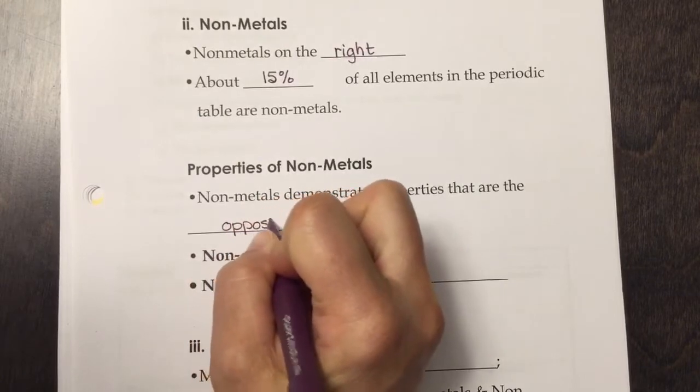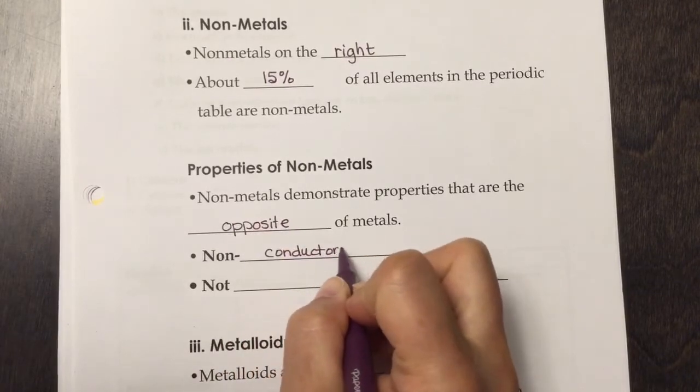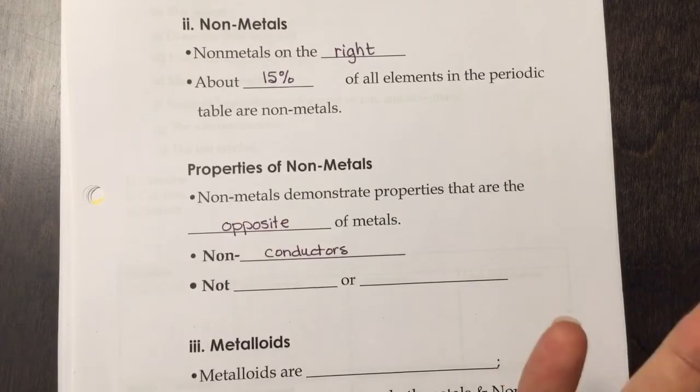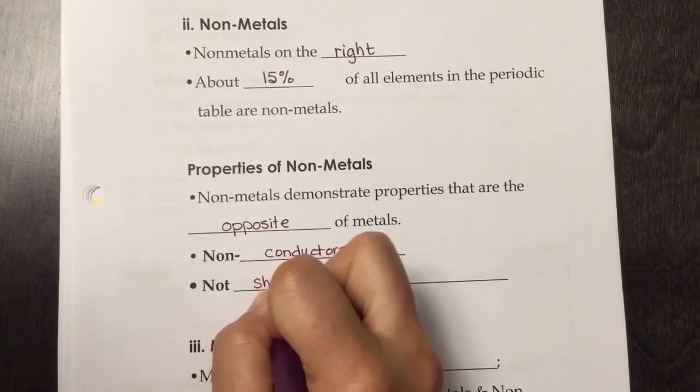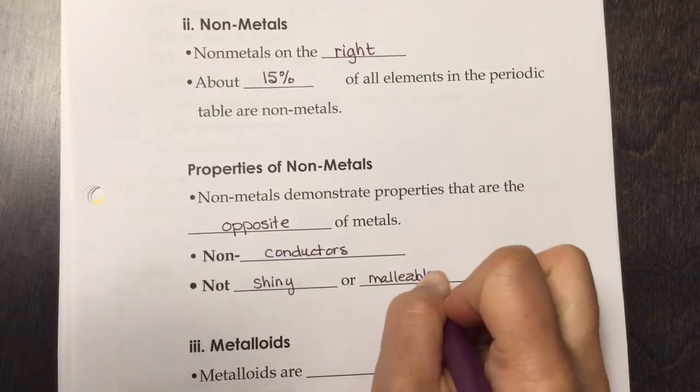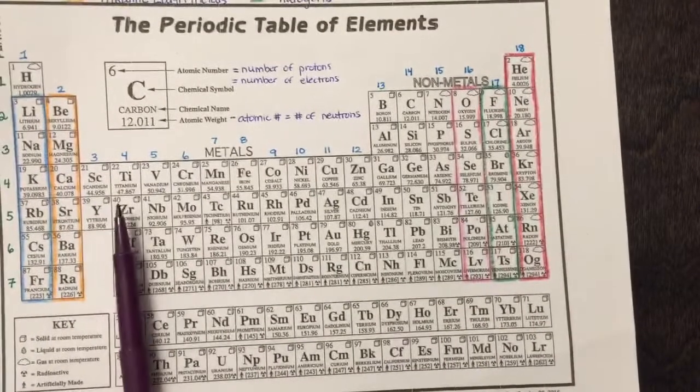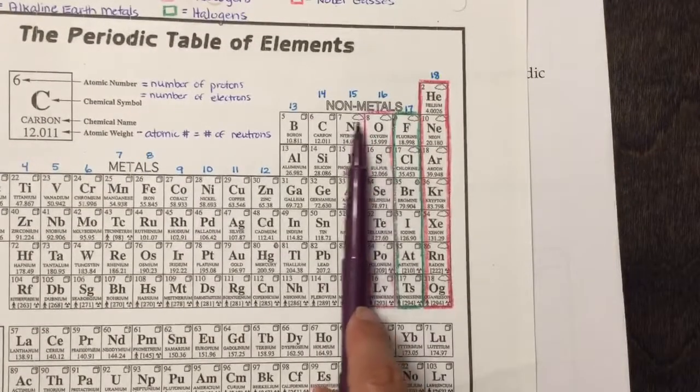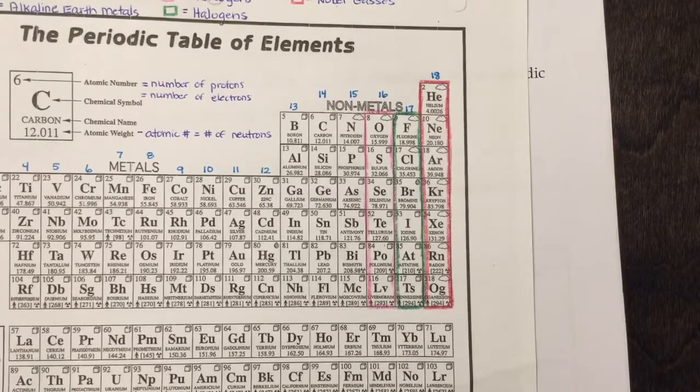Non-metals demonstrate properties that are opposite of metals. They are not conductors of electricity - thank goodness, otherwise when we're outside in a lightning storm, everybody outside would be electrocuted. They're not shiny or malleable. And if you look at the periodic table, most of the states of metals at room temperature are all solids, but many of the non-metals are gases. That's what the little cloud means.